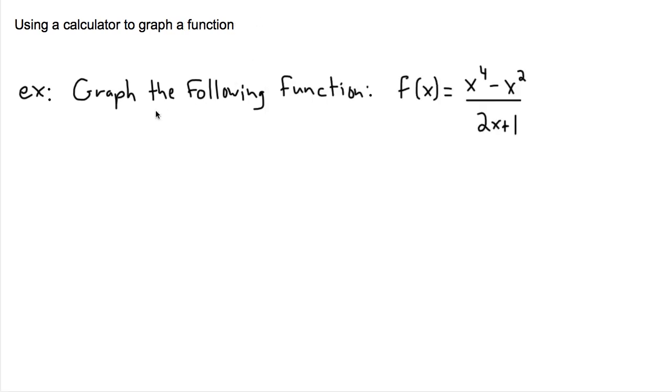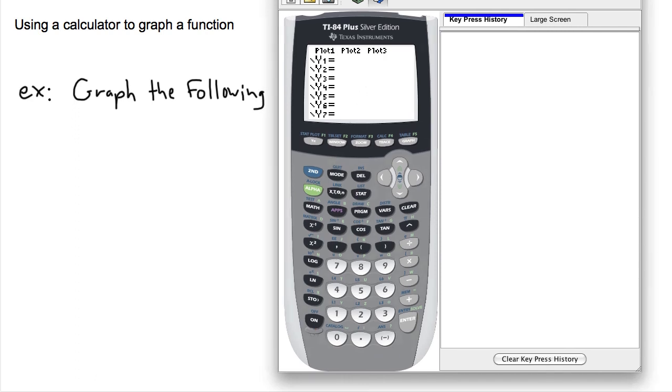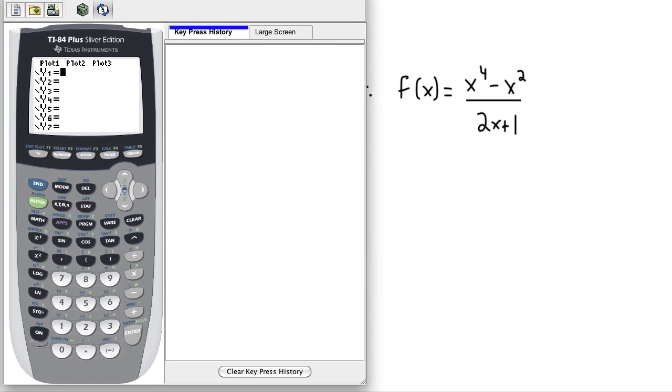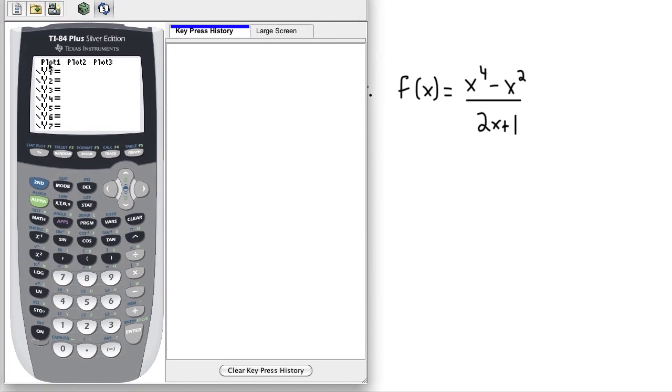So for starters, let's take a look at this equation here. I want to graph this function. f of x equals x to the fourth minus x squared, all that divided by 2x plus 1. So what I'm going to do then is open up my calculator and I'm going to try to graph that exact thing. So maybe I'll leave myself a little bit of room here so I can see what I'm doing. Now instead of f of x, remember, we just have to graph y equals all this stuff. Now this might be complicated to do as far as getting your calculator to understand what you want it to do.